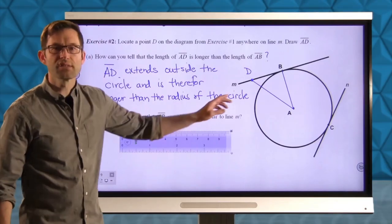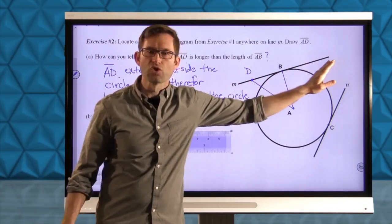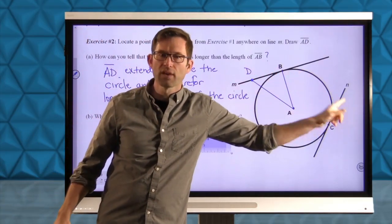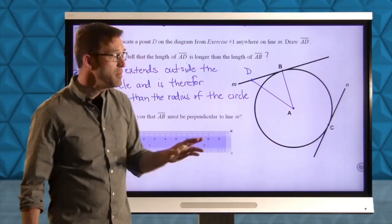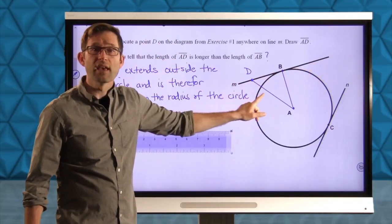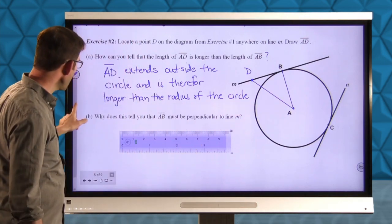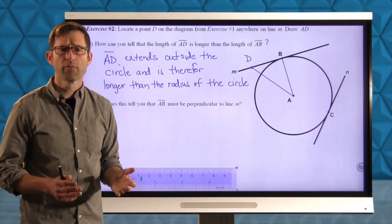Well, it's quite simple. AD extends outside the circle. And it is therefore longer than the radius of the circle. Because remember, by definition, a tangent hits the circle only at one point. Which means the rest of the tangent must lie outside of the circle. If the tangent went inside of the circle, then it would have to hit the circle or intersect the circle more than once. But that means any point that lies along M is a farther distance away from A than B. And that gets then down into this part.